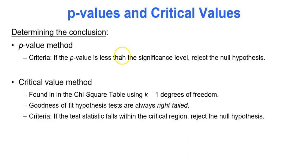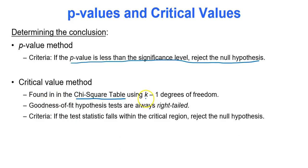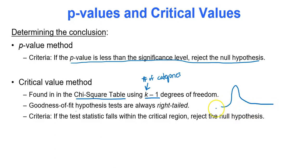To form a conclusion, remember the p-value method: if the p-value is less than the significance level alpha, we reject the null hypothesis. There's also the critical value method, found from a chi-square table using k minus 1 degrees of freedom. A goodness of fit hypothesis test is always right-tailed because of the shape of the chi-square distribution — it has a big peak and a tail that lingers off to the right.